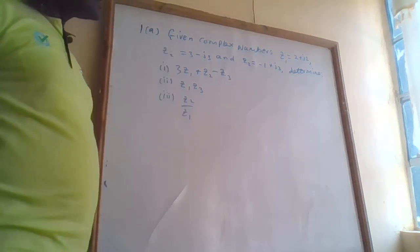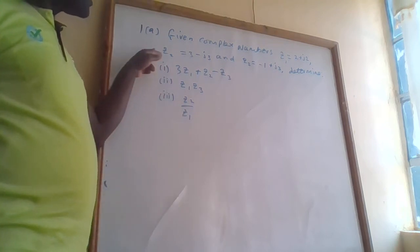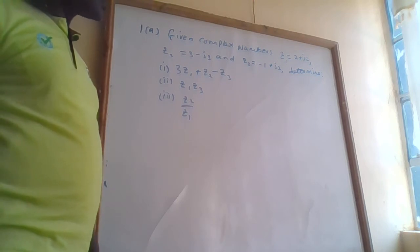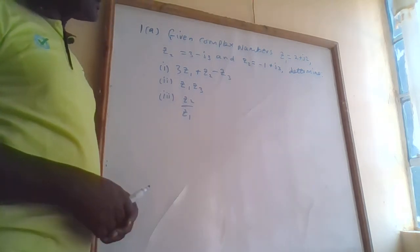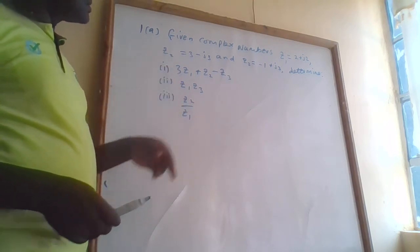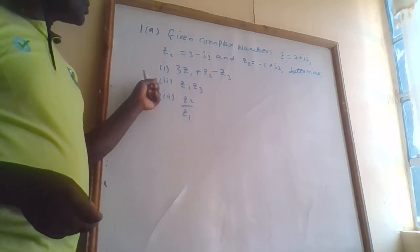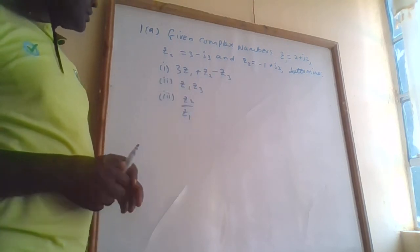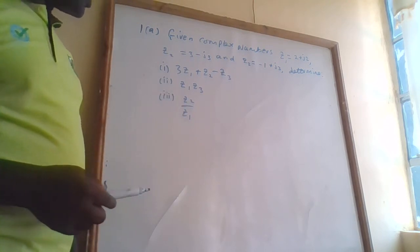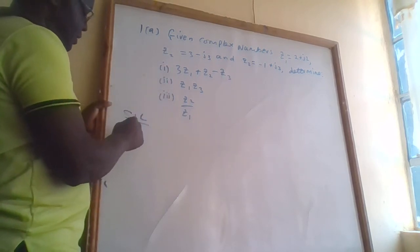Given complex numbers Z1 equals 2 plus j2, Z2 equals 3 minus j3, and Z3 equals negative 1 plus j3. They want us to determine: Roman I, 3Z1 plus Z2 minus Z3; then Roman II, Z1 times Z3; and then Roman III, they want us to find Z2 divided by Z1.